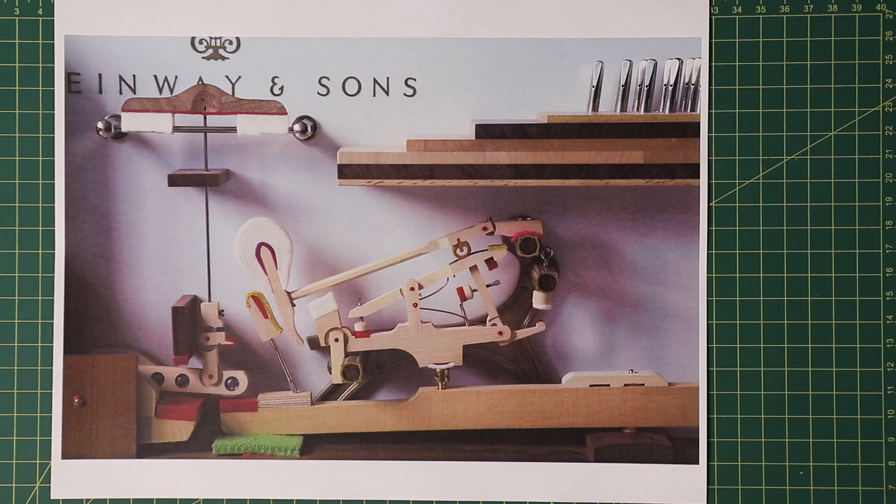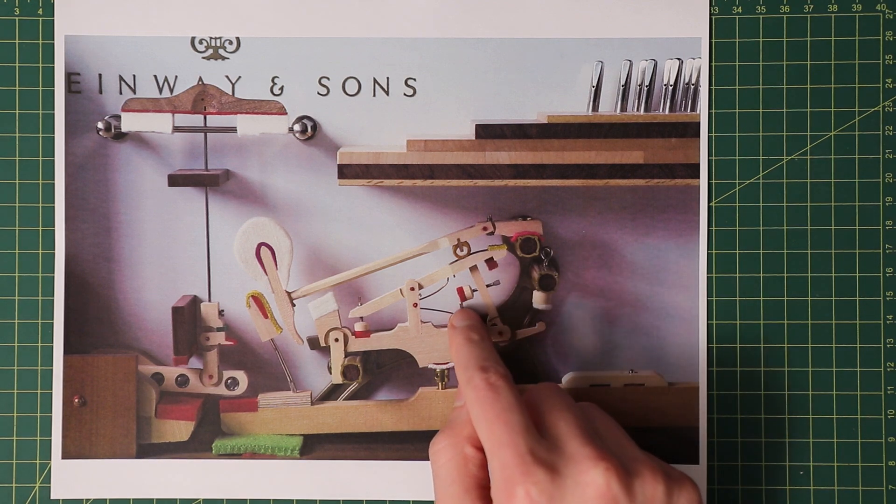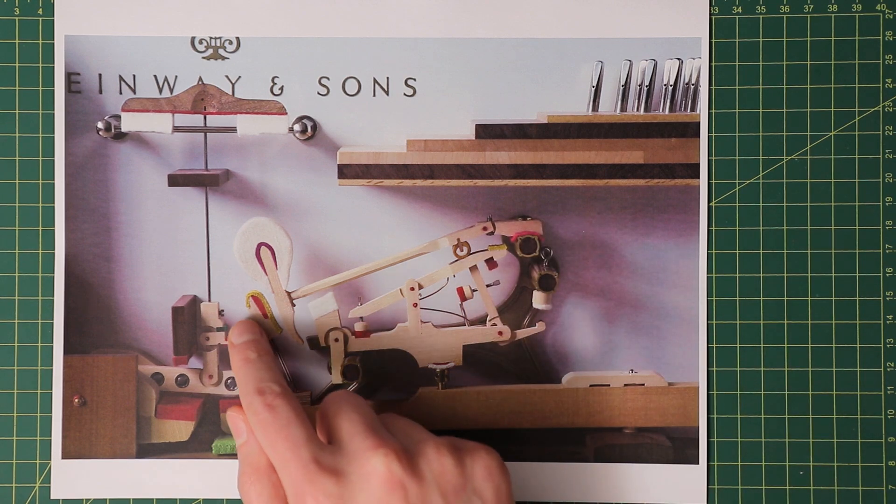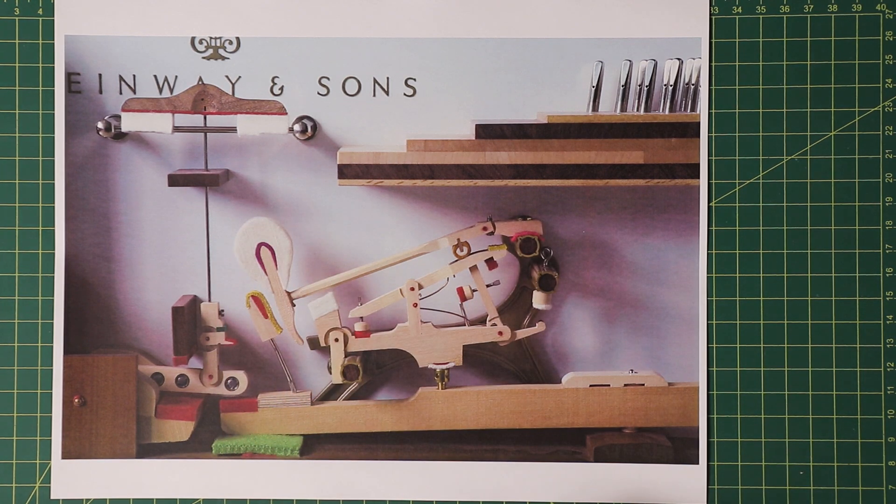Once the key starts to be released, the repetition mechanism here goes into effect. The spring here, along with this lever, keeps the hammer more or less stationary as the back of the key and the weapon itself fall down.